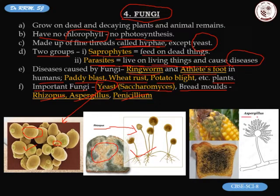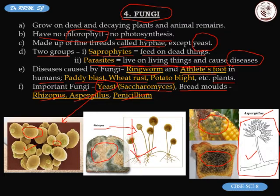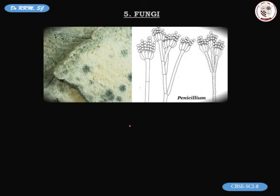The third example is aspergillus, which can grow not only on bread but also on plants — for example on corn. Simple structures are provided here so you can draw them easily, and only these structures need to be drawn with their labels.